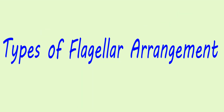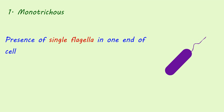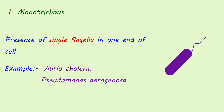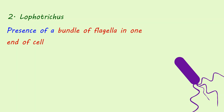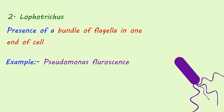Types of flagella on the basis of arrangement: 1. Monotrichous — presence of a single flagellum at one end of the cell. Examples: Vibrio cholerae, Pseudomonas aeruginosa. 2. Lophotrichous — presence of a bundle of flagella at one end of the cell. Example: Pseudomonas fluorescens.